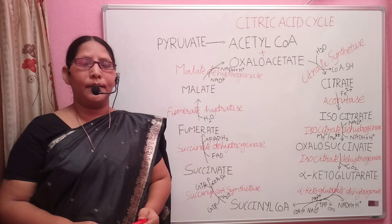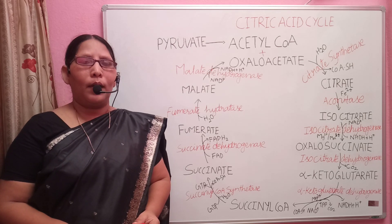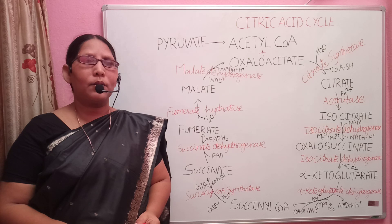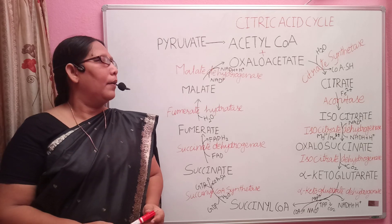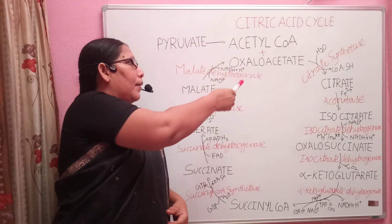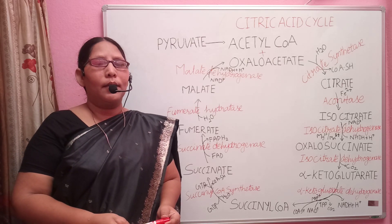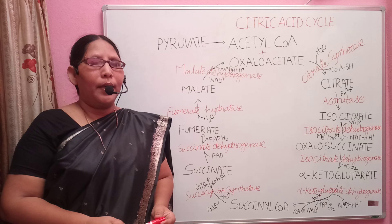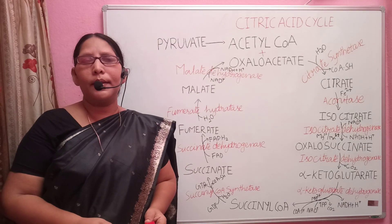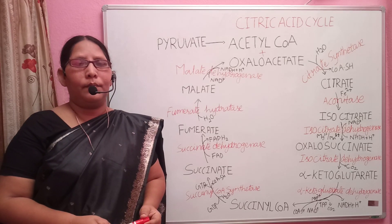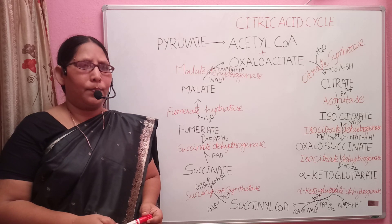Acetyl coenzyme A is mainly used for the synthesis of cholesterol and also for the synthesis of fatty acids. When acetyl coenzyme A is combined with oxaloacetate in the presence of citrate synthase, it produces citrate, or citric acid. During this reaction, coenzyme A is liberated and a water molecule is added.